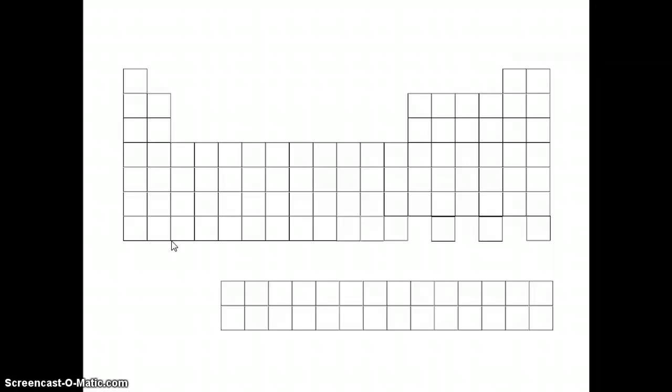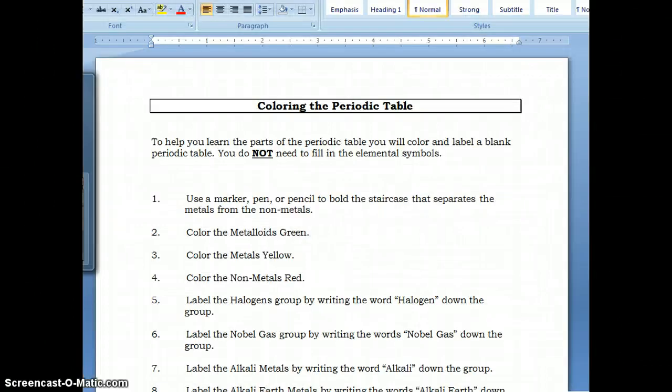So what we're doing here is we're making a tool that you'll be able to use throughout our time in class together. So you're going to take this periodic table, the blank one, and we're going to go step by step through the process of coloring this periodic table.